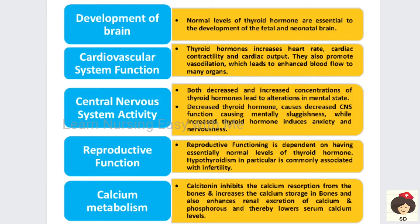In the central nervous system, both decreased and increased concentrations of thyroid hormones can alter the mental state. Whenever there is more or less hormone, mental problems like irritability, sluggishness, anxiety, and nervousness can occur. The thyroid hormone must be in a normal amount. Normal levels of thyroid hormone are also responsible for reproduction. If a person has decreased thyroid hormone, it may result in infertility.